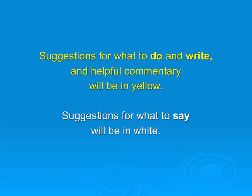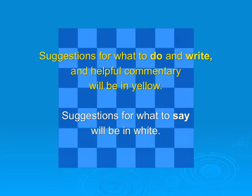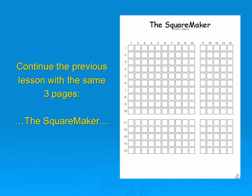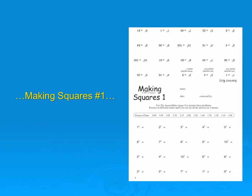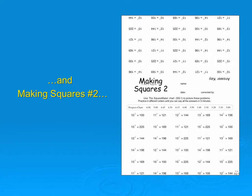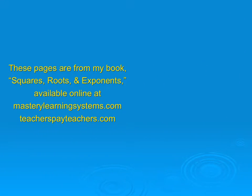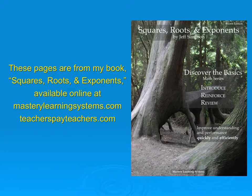Suggestions for what to do and write and helpful commentary will be in yellow. Suggestions for what to say will be in white. Continue the previous lesson with the same three pages: The Square Maker, Making Squares No. 1, and Making Squares No. 2. These pages are from my book, Squares, Roots, and Exponents, available online at MasteryLearningSystems.com and TeachersPayTeachers.com. They're simple pages, so you can make something just like them yourself.